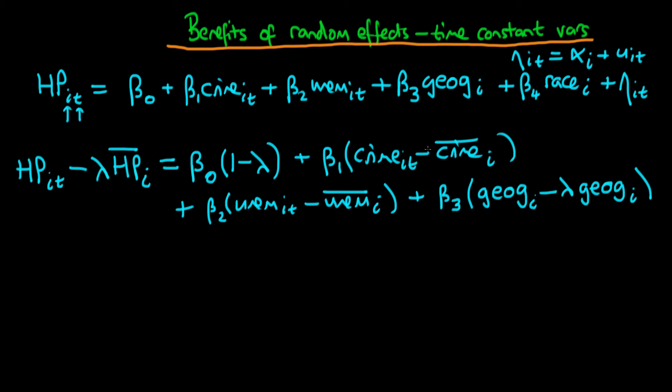And I've just realized that in both of these expressions for crime and for unemployment we need to have a lambda in there as well. And then finally, or penultimate expression rather, we're going to have race_i minus lambda times the time mean of race, which is just going to be race_i. And then finally we're going to have eta_it minus lambda times eta_i bar.